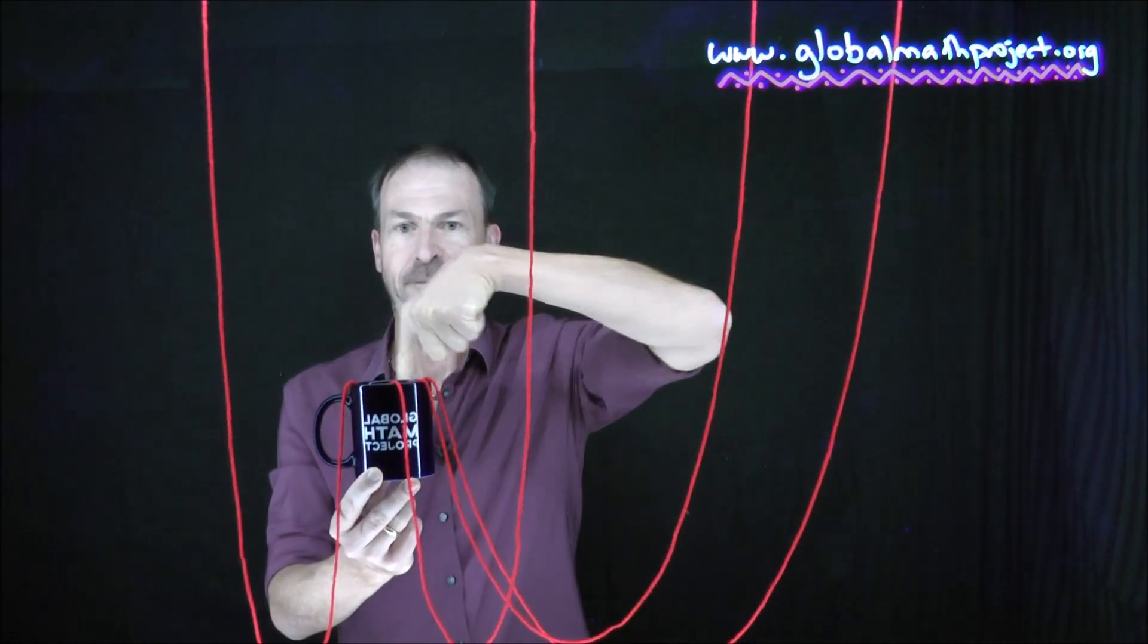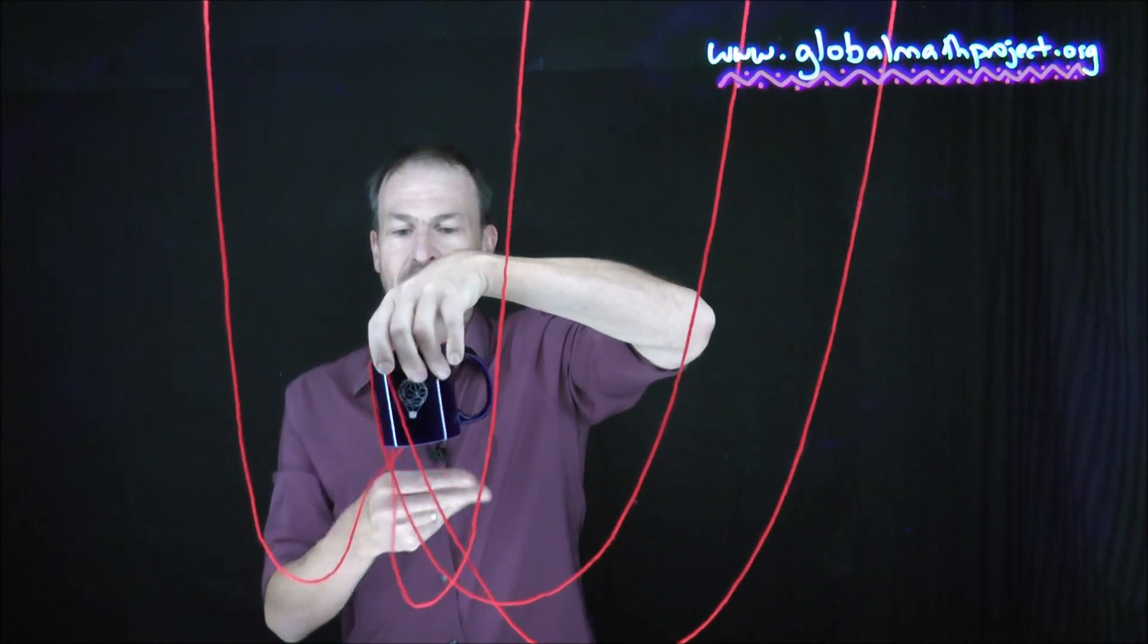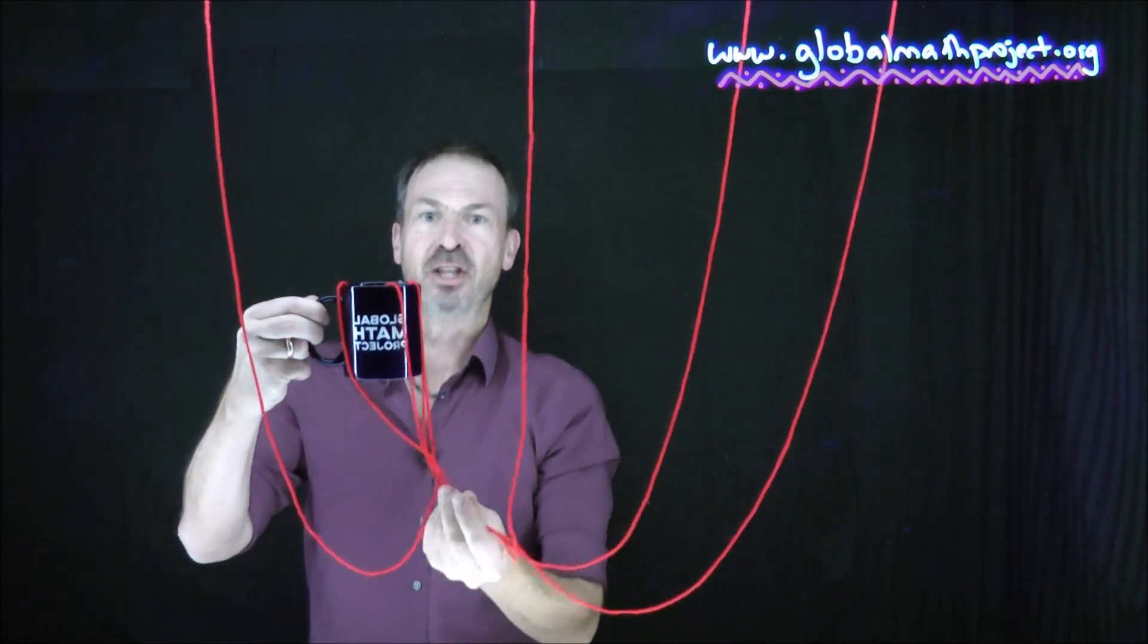I'm going to give this mug one full turn this way. I'll be very consistent. I'm going to go towards me first and away from me back that way. Here it goes. One full turn. One. Great. And the handle's back facing that way. And look what's happened. The strings have got tangled as a result.